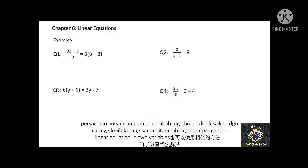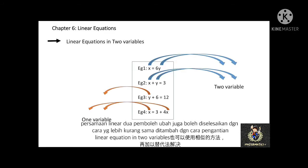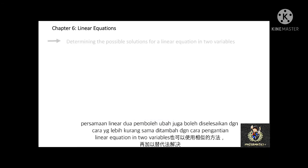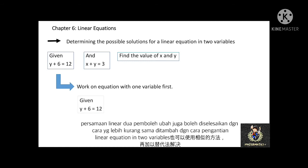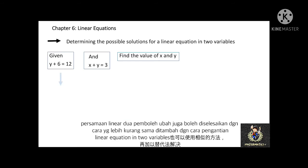Remember, just now we talked about linear equations in 2 variables. We can also determine the possible solutions for linear equations in 2 variables. Given 2 linear equations: y plus 6 equal to 12 and x plus y equal to 3. There are 2 variables in these 2 equations: x and y. First, work on the equation with 1 variable first, which is y plus 6 equal to 12. Rearrange this equation with the variable on the left-hand side and numbers on the right-hand side. Then substitute y equal to 6 into the equation x plus y equal to 3, which results in x plus 6 equal to 3. Rearranging gives x equal to negative 3.